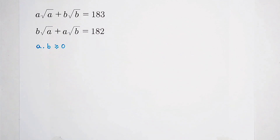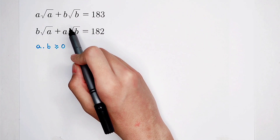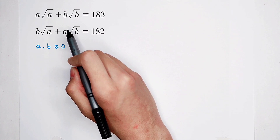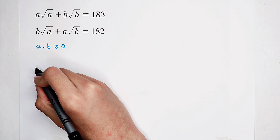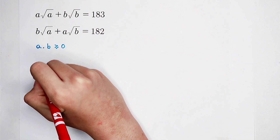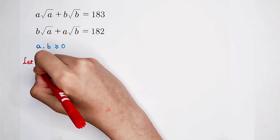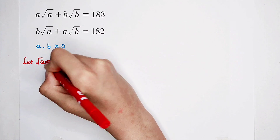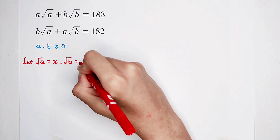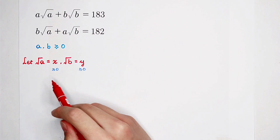Of course you can. A is the square root of A, squared. And B is the square root of B, squared. So now, by using substitution we can proceed. We substitute square root of A and square root of B. Let square root of A be equal to x, and square root of B be equal to y. Of course, x and y are also both non-negative.